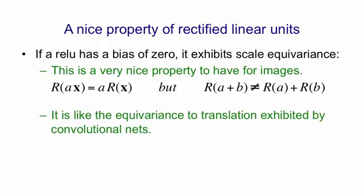So if we ignore the pooling for now, in a convolutional net, if we shift an image and look at the representation, the representation of a shifted image is just a shifted version of the representation of the unshifted image.